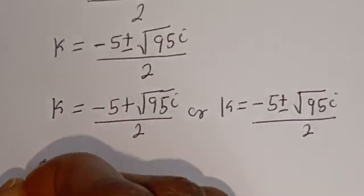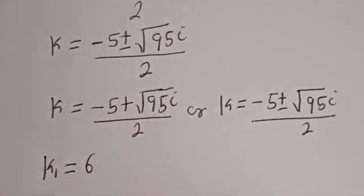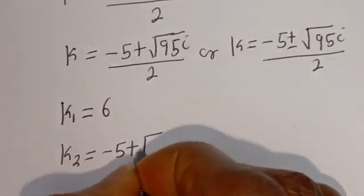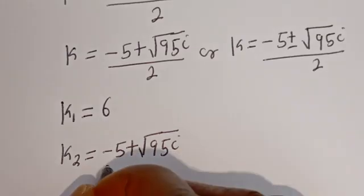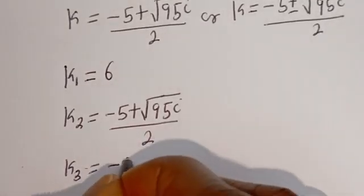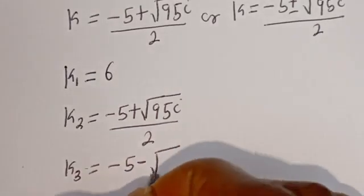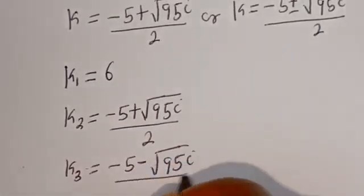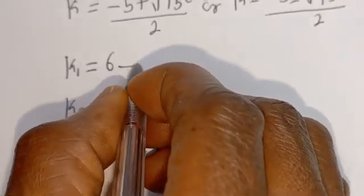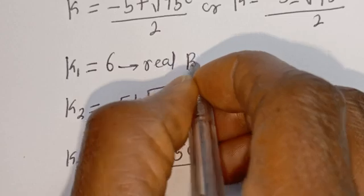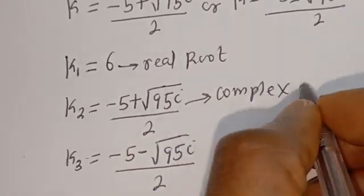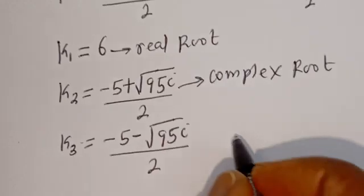Therefore our final answers are: k1 equals 6; k2 equals minus 5 plus the square root of 95 times i, divided by 2; and k3 equals minus 5 minus the square root of 95 times i, divided by 2. We have two complex roots and one real root. k1 is the real root, and k2 and k3 are complex roots.